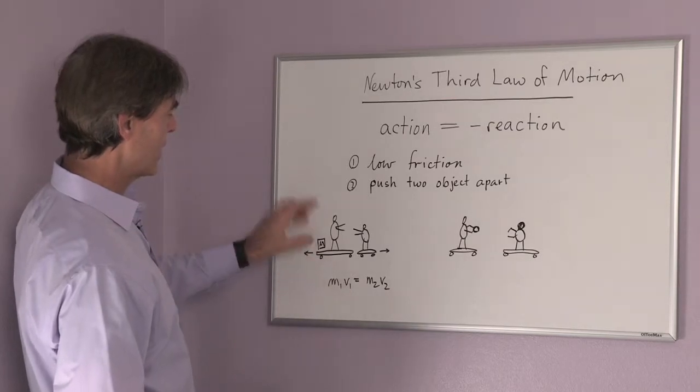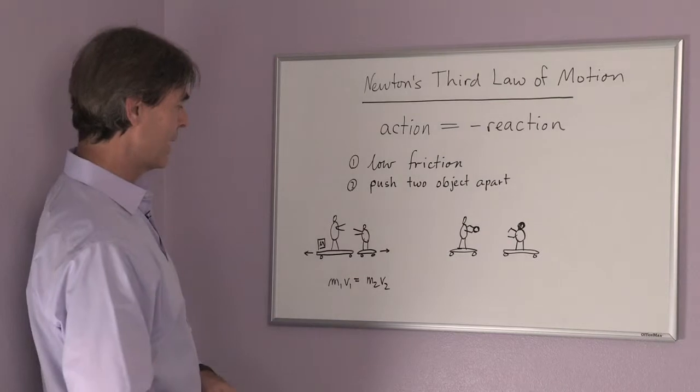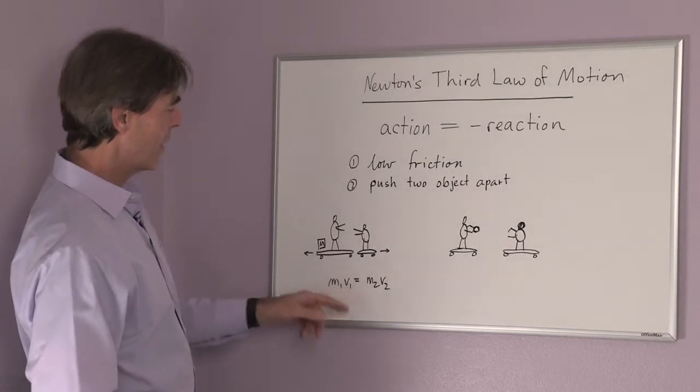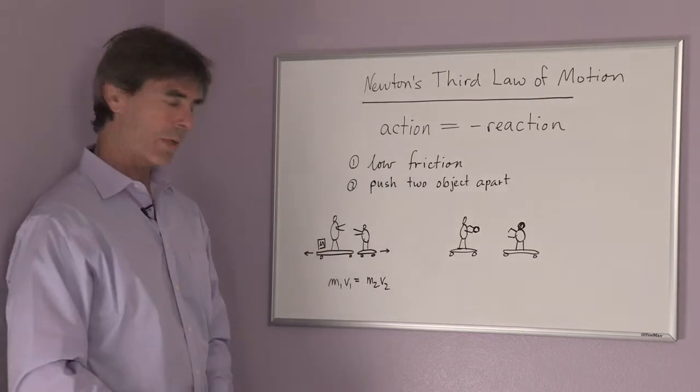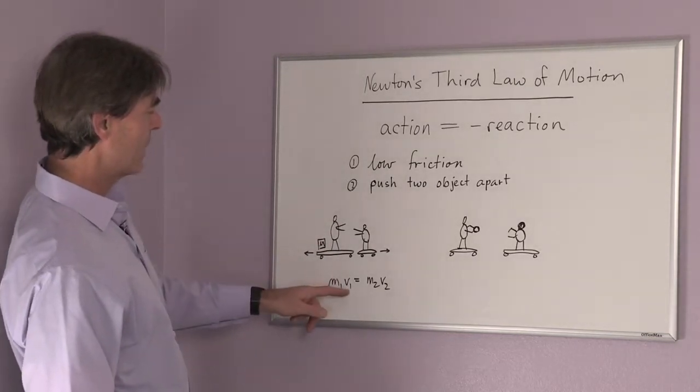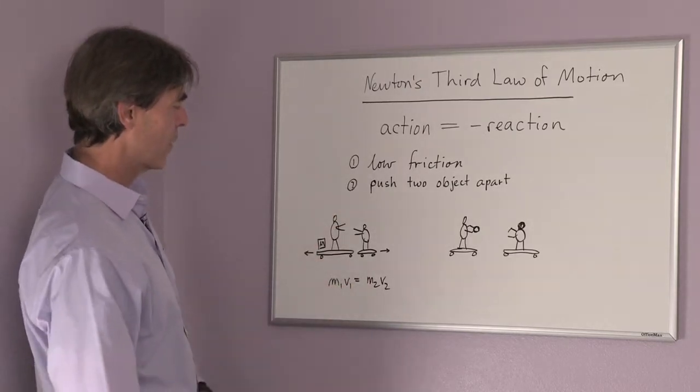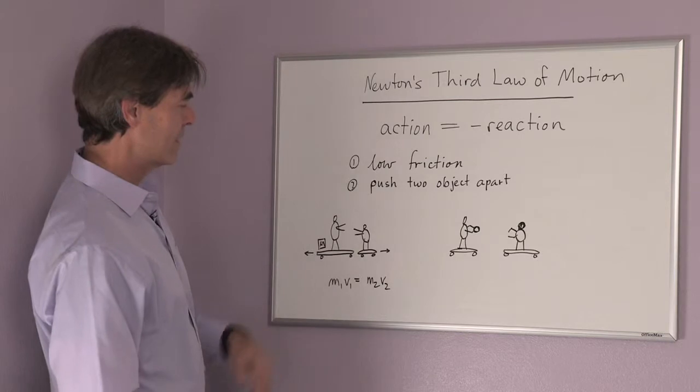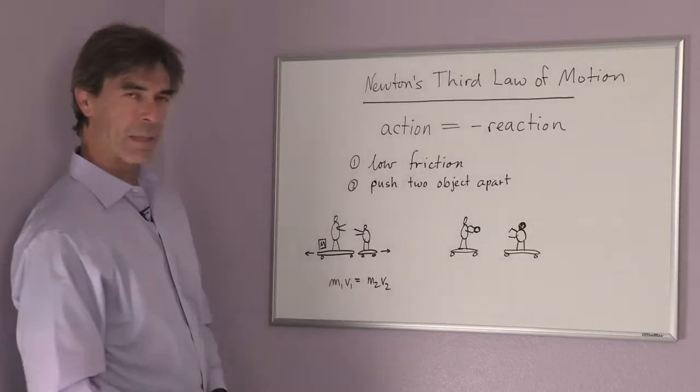The velocity that the more massive skateboard takes on will be a little bit less than the velocity that the lighter mass skateboard would have. And so it's this formula: the total mass times the velocity for case one equals the total mass and velocity in case two. You have to measure the weight of the person and the skateboard together.